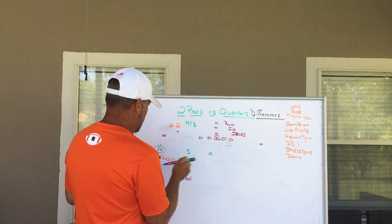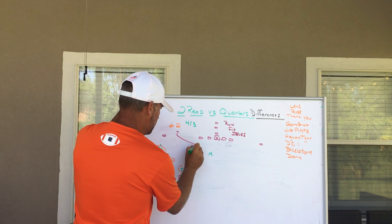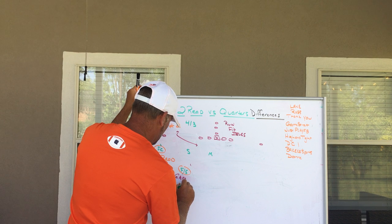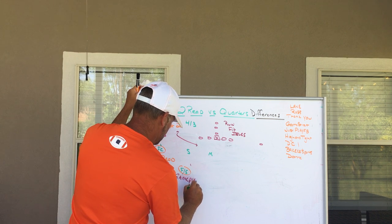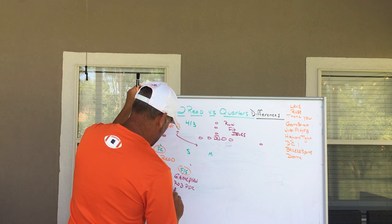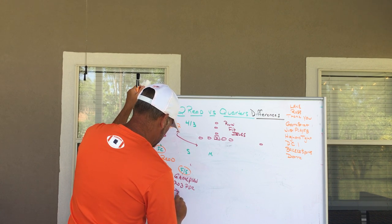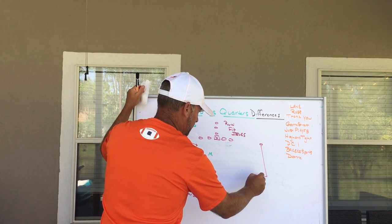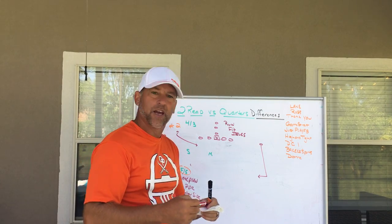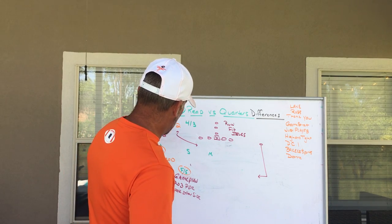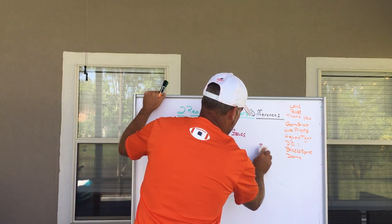If number two goes inside across the formation, we have a chance to game-plan with the free safety — we can rob the post-curl of number one, or look to the other side of the formation because a lot of times if you get a shallow from this guy, you'll get a dig coming from the receiver over there. So we can game-plan from that inside release what we want the free safety to do in our two-read coverage.